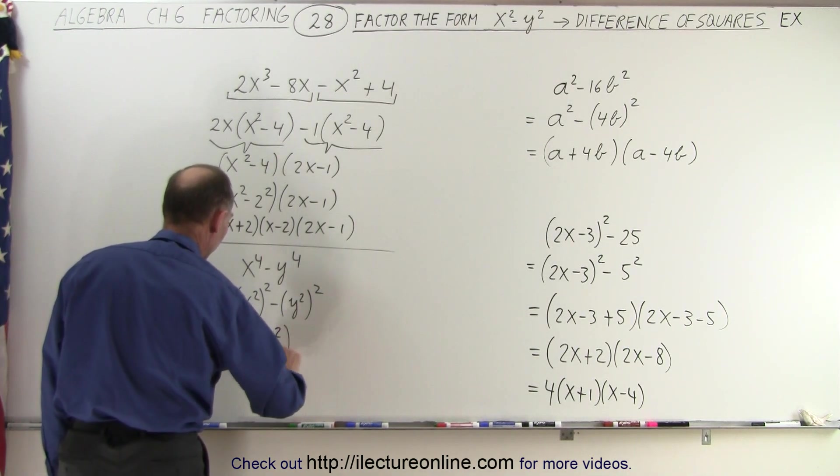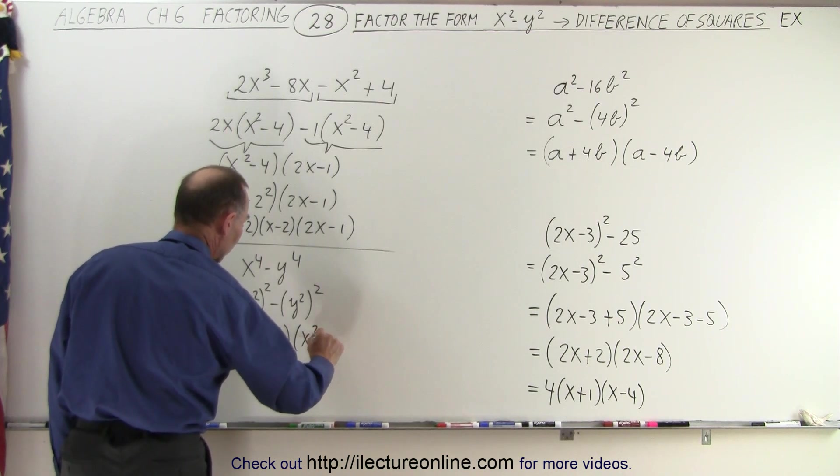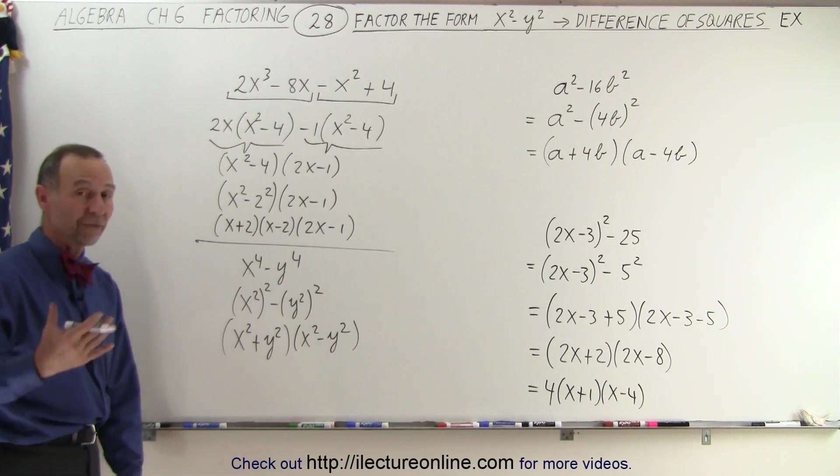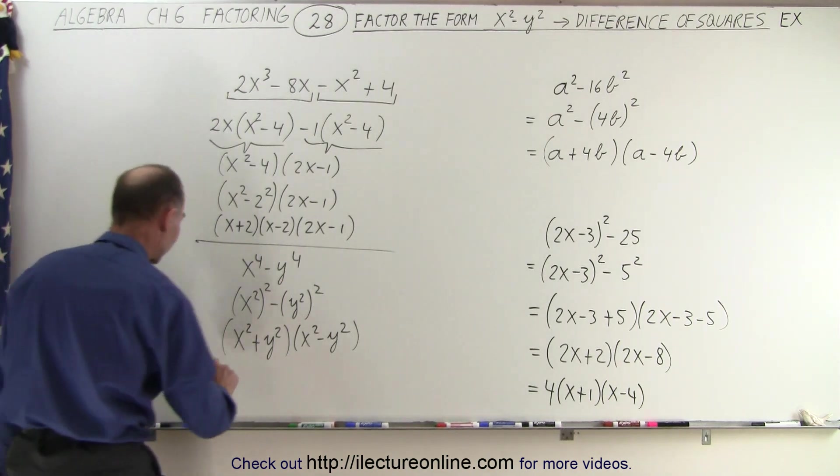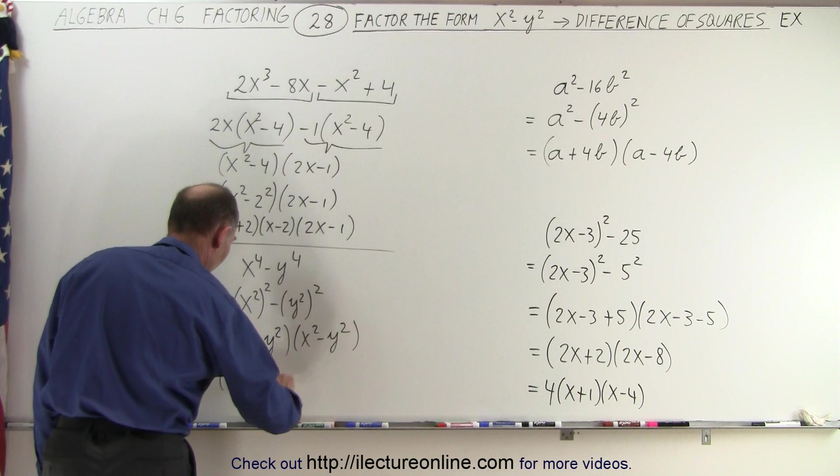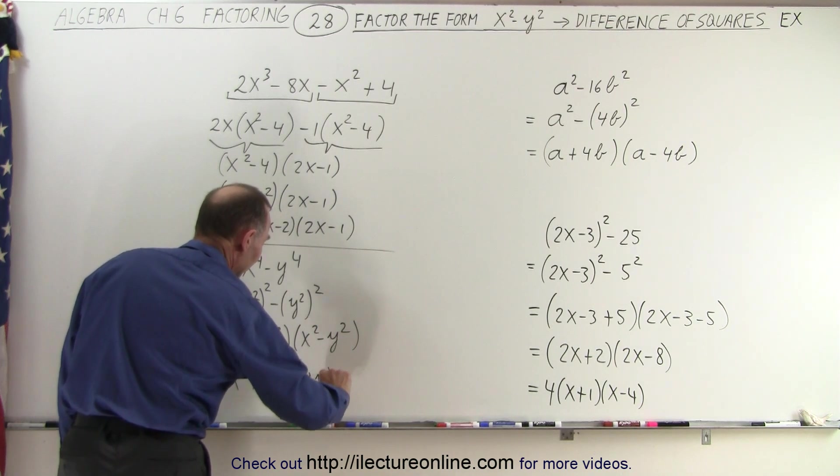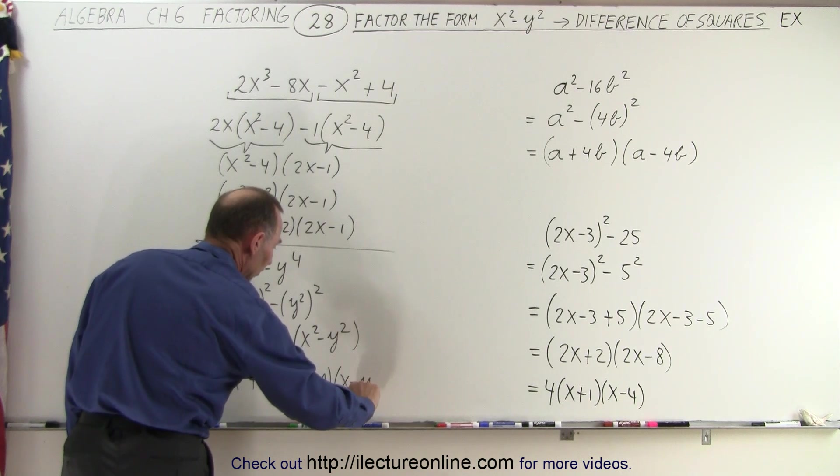Which can therefore be written as x² plus y² multiplied times x² minus y². And then you look at this and go, well, that's the difference of squares, so that can also be factored as follows.